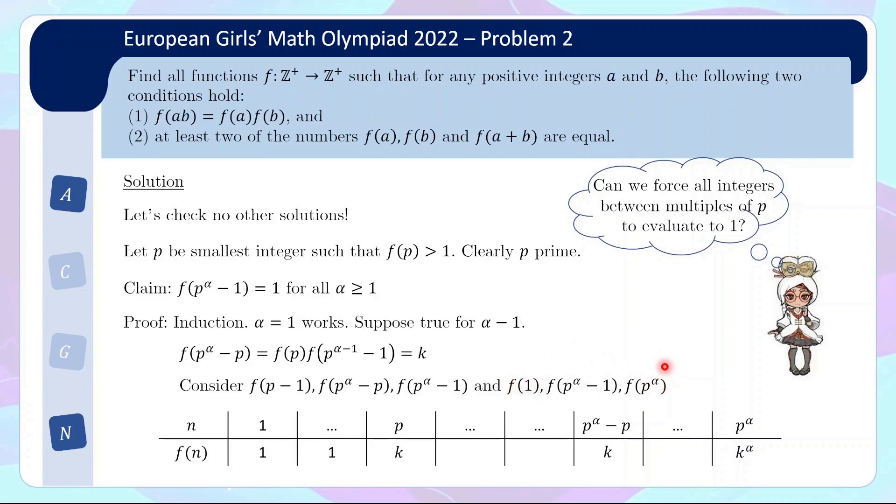And similarly, this is 1, this is k to the alpha, so this is 1 or k to the alpha. So very similar to the important example, you have 1 or k, and then in this case 1 or k to the alpha, so you are forced to have f(p to the alpha minus 1) equals 1. So this concludes the proof of the claim.